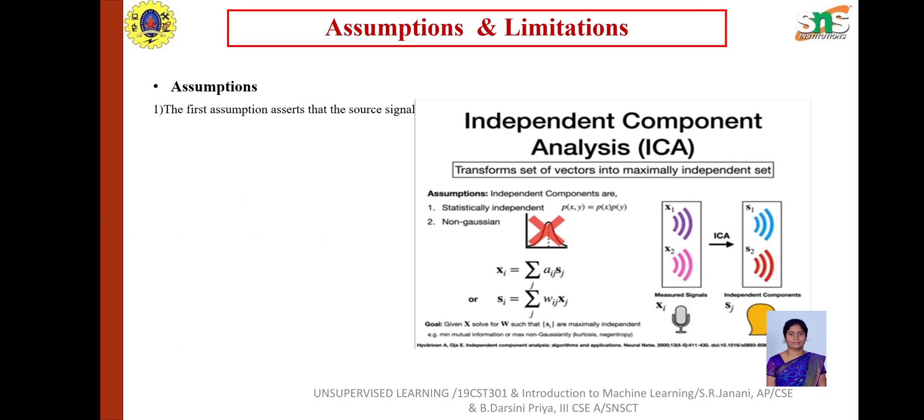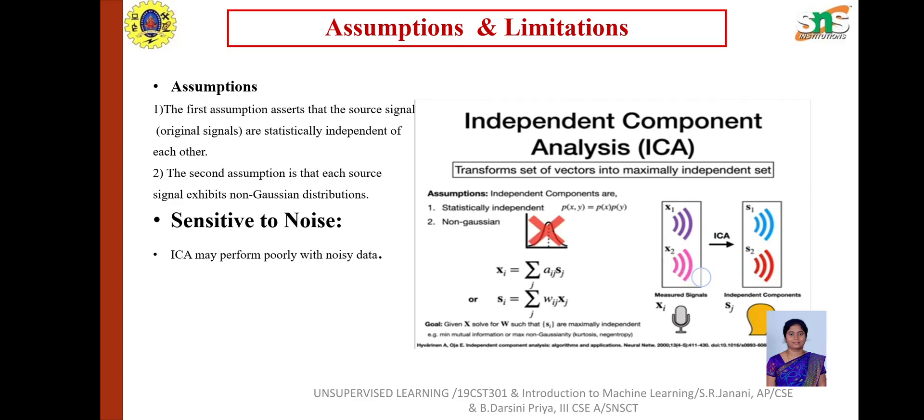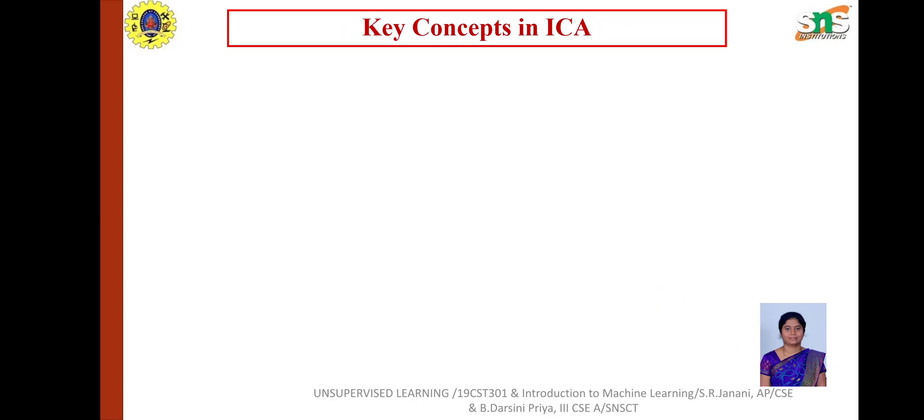Assumptions: The first assumption asserts the original signals are statistically independent of each other. The second assumption is non-Gaussian distribution. Limitations include sensitivity to noise and that the order of components in recovered signals is arbitrary.